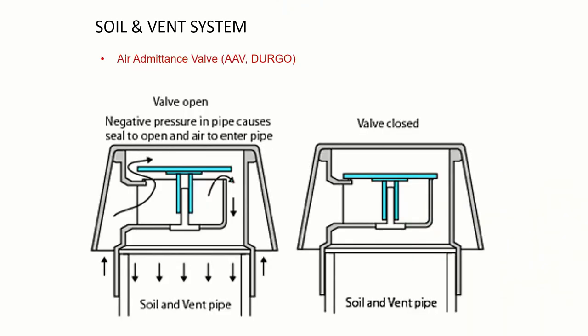The air admittance valves work in a particular way. When the valve opens, because the water wants to run downwards, there's a negative pressure that happens within the pipe. There's a diaphragm within the air admittance valve, which then reacts to that negative pressure, pulls up, and air can then come in from the space to equalize the pressure. Once the pressure is equalized, the valve closes. So there's no possibility of smells getting out of the pipe into the space.